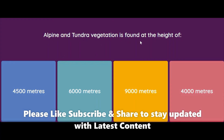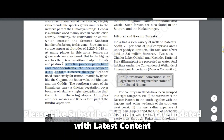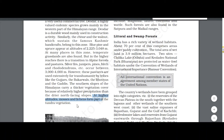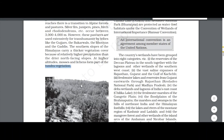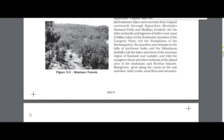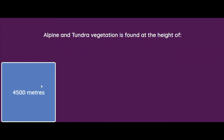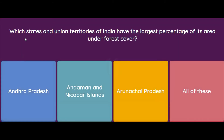Alpine and tundra vegetation is found at the height of 4500 meters, 6000 meters, 9000 meters, or 4000 meters? The answer is 4500 meters as per the textbook. Silver firs, junipers, pines, birch, and rhododendrons occur between 3000 and 4000 meters. The southern slopes of the Himalayas carry thicker vegetation due to relatively higher precipitation than the drier north-facing slopes. At higher altitudes, mosses and lichens form the tundra vegetation beyond 4000 meters.